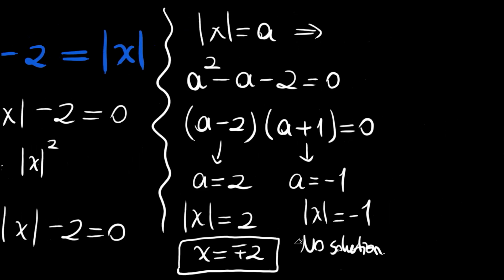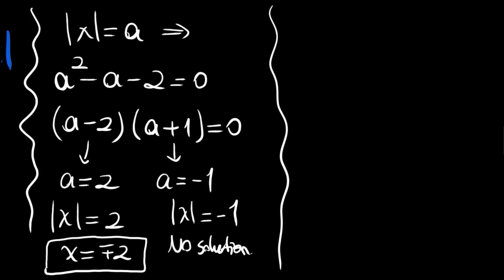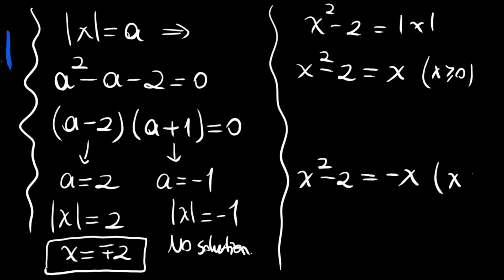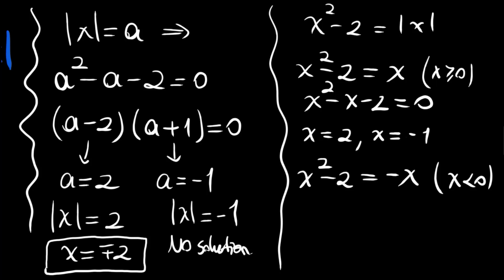Let's try another method. Our original equation is x squared minus 2 equals absolute value of x. We split into cases: x squared minus 2 equals x when x is greater than or equal to 0, giving x squared minus x minus 2 equals 0, so x equals 2 or x equals minus 1. Since x must be non-negative, only x equals 2 is valid.